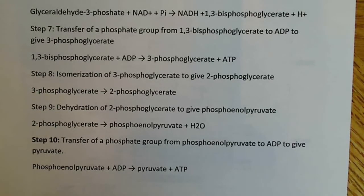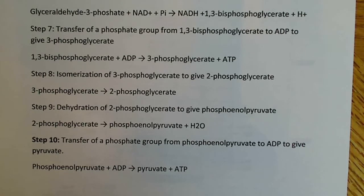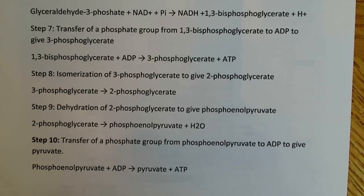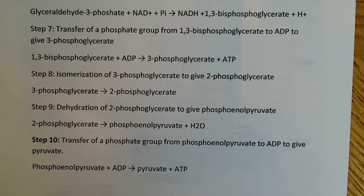Step seven is the transfer of a phosphate group from 1,3-bisphosphoglycerate to ADP to give 3-phosphoglycerate. That's one of the steps where a phosphate is transferred to ADP — phosphorylation of ADP to give ATP — so we're making ATP here. Just recall that all the reactions are doubled at that point, and I have a diagram to illustrate that in a moment.